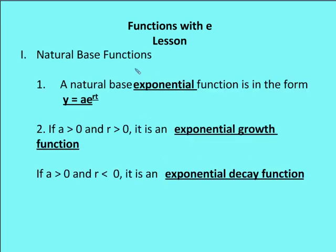Now we're going to talk about the natural base exponential function. We talked about exponential growth and exponential decay. The natural base exponential function is in the form y = AE^(RT). Remember, we had y = AB^x — that was our exponential growth and decay base. The natural base exponential function is almost exactly like our exponential growth and decay functions.